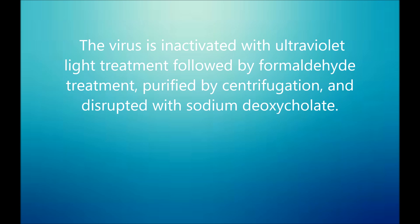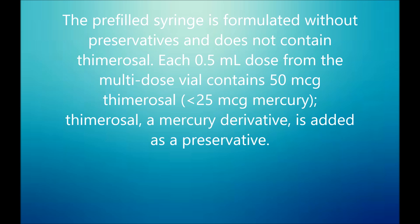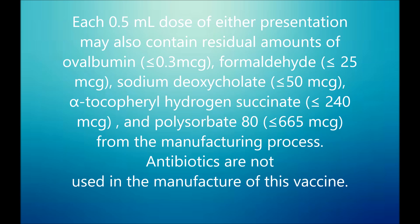The virus is inactivated with ultraviolet light treatment followed by formaldehyde treatment, purified by centrifugation, and disrupted with sodium deoxycholate. The pre-filled syringe is formulated without preservatives and does not contain thimerosal. However, each 0.5 ml dose from the multi-dose vial contains 25 micrograms of thimerosal, which is a mercury derivative. The vaccine insert also lists a number of other chemicals used as preservatives, and it is important to note that antibiotics are not used in the manufacture of this vaccine.